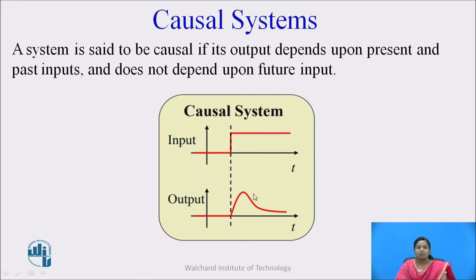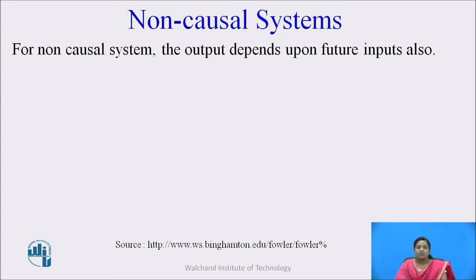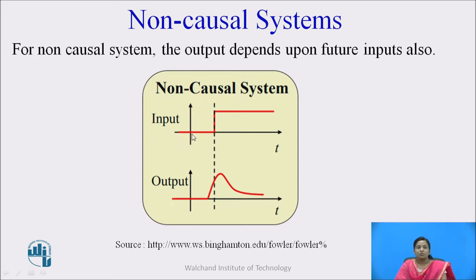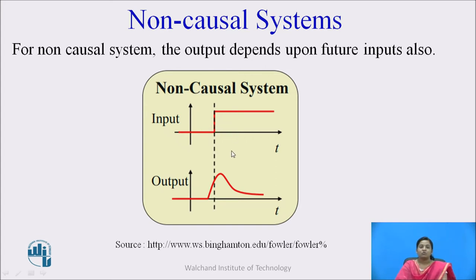This is one example of the causal system. For a non-causal system, the output depends upon future inputs also. The output of this system depends upon the present value and also the future value of the input signal. Such systems are called non-causal systems.